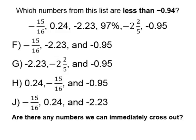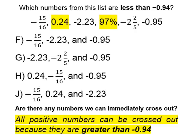Before we begin converting, let's see if there are any numbers we can immediately cross out on our list. Looking at the list, we know that we can cross out point twenty-four and also ninety-seven percent. We are looking for numbers less than negative point ninety-four, and because point twenty-four and ninety-seven percent are positive numbers, they are greater than negative point ninety-four, so we can cross them out.